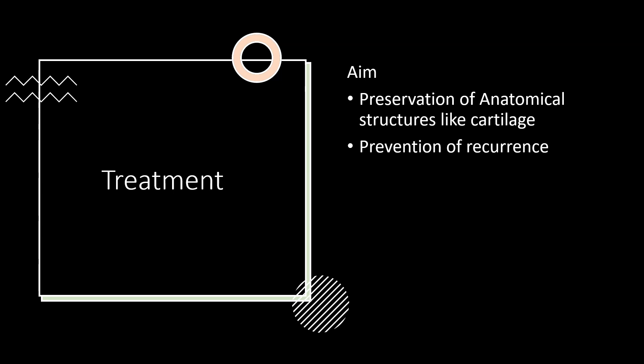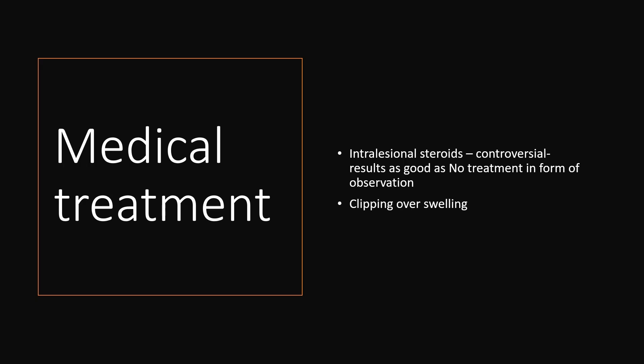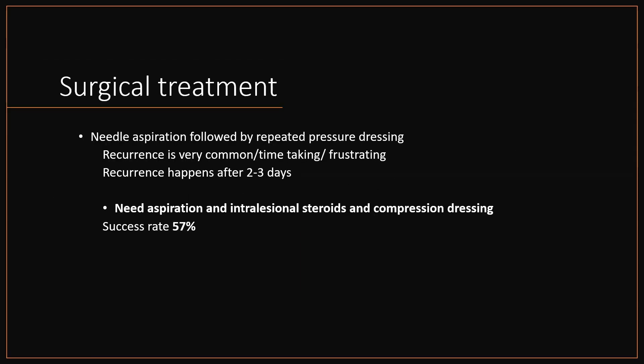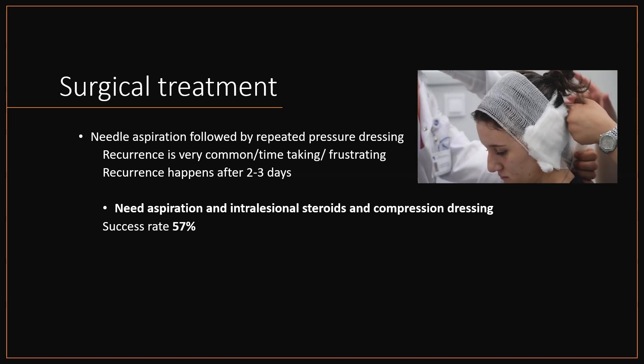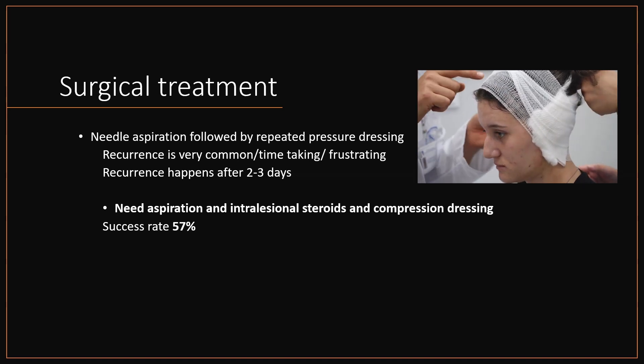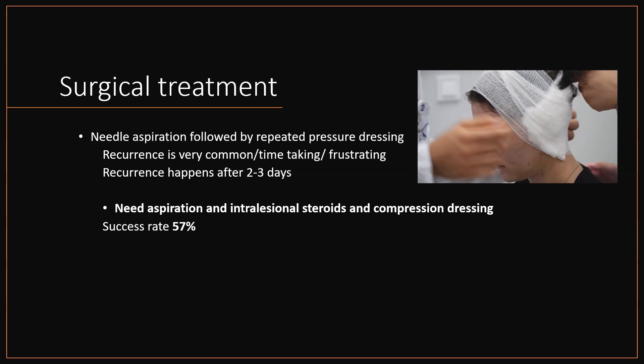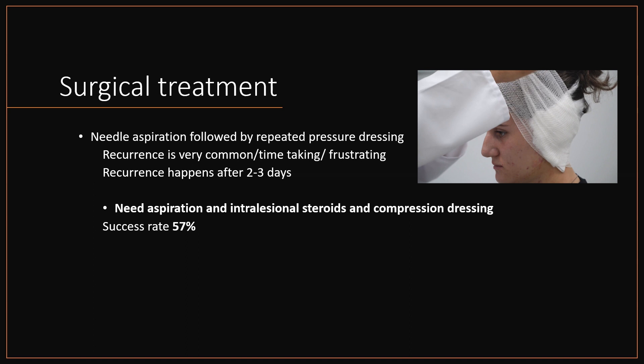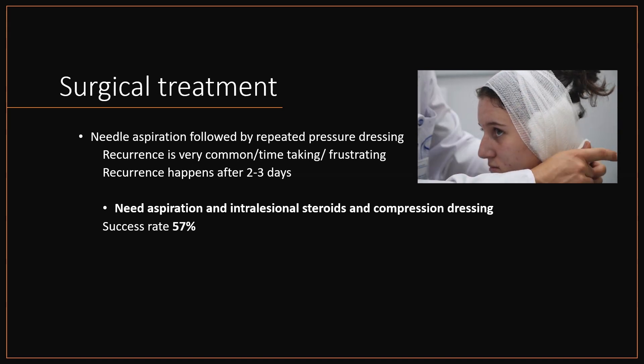The aim of treatment is to preserve the anatomical structure like cartilage and to avoid future recurrence. Medical treatment has not been found to be very successful. Initially, steroids were injected into the lesion, and later clipping over the pinna was done to avoid recurrence, but it was not very successful. Then repeated aspiration was tried followed by pressure bandage, but recurrences were seen as early as two to three days, and repeated pressure dressing for many weeks was a very frustrating experience. When medical treatment was combined with repeated aspiration and pressure dressing, the overall success rate was found to be 57 percent.